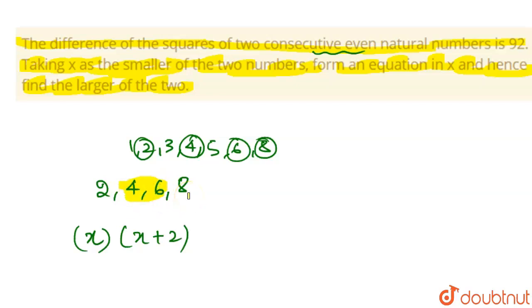We are asked that the difference of the squares of two consecutive even natural numbers. This is the square of two consecutive even natural numbers, that means x² difference. This is the highest term and this is the lower term. x plus 2 will be the highest term, and difference is being done from highest term to smallest term.